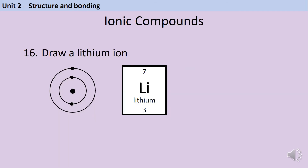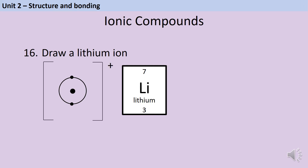To draw a lithium ion, we start with a lithium atom. This has three electrons because the atomic number of lithium is three. Elements in group one will always lose one electron to gain a full outer shell and produce an ion. So our lithium atom loses one electron and therefore we don't need to draw the second shell. To show that this is now a positively charged ion, we add square brackets and a single positive charge.